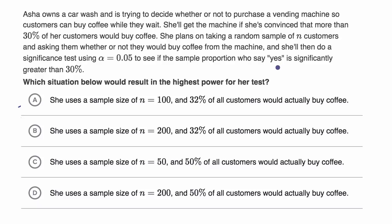Well, before I even look at the choices, we could think about what her hypotheses would be. Her null hypothesis is the status quo, no news here. And that would be that the true population proportion of people who want to buy coffee is 30%.